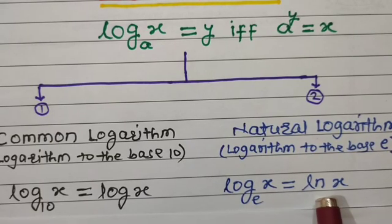Rule number 6: the logarithm of a number to the base of the same number — that is, log base a of a — is equal to 1. The logarithm of any number to the base that same number is always 1. Rule number 7: the logarithm of 1 to the base of any positive number b is equal to 0, where b is a positive base.